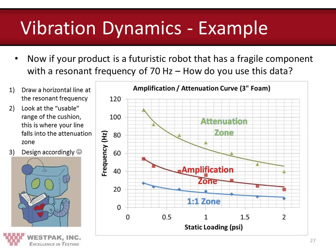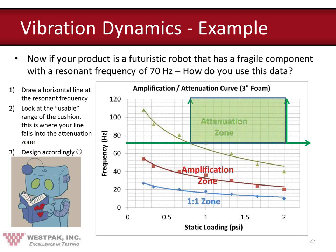Here's a real-life example: if our product is a futuristic robot with a fragile component having a resonant frequency of 70 Hz, we draw a horizontal line at 70 Hz on the AA plot. We then find the range of static loadings that fall into the attenuation zone at that frequency — approximately 0.8 to 2 PSI. Loading the product within that range means it should be protected from vibration damage because it's in the attenuation zone.